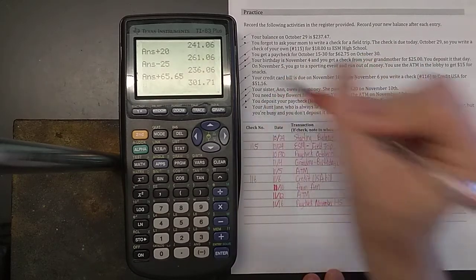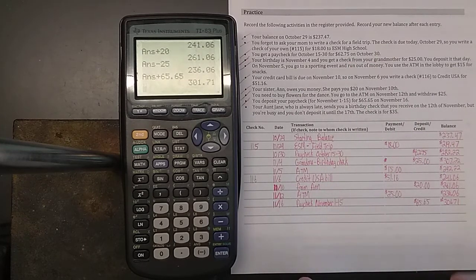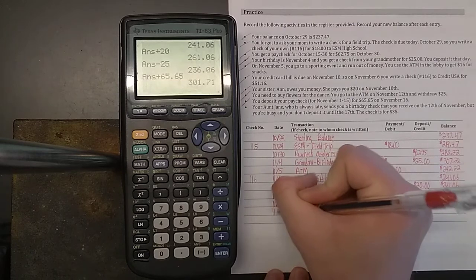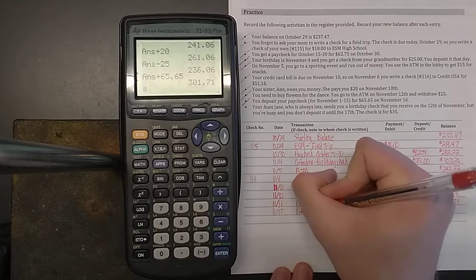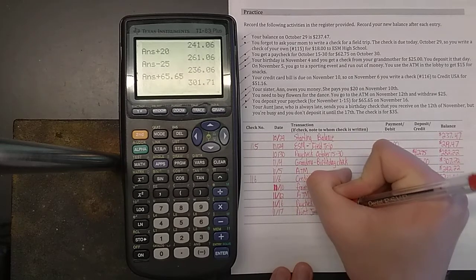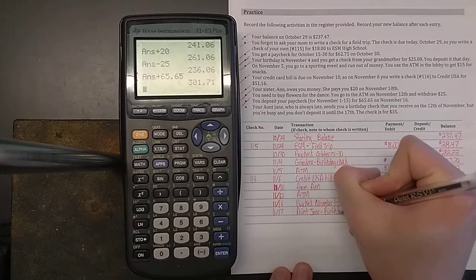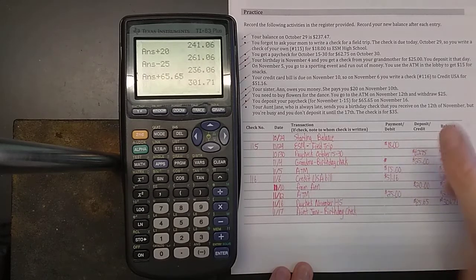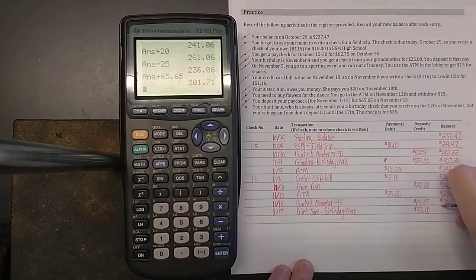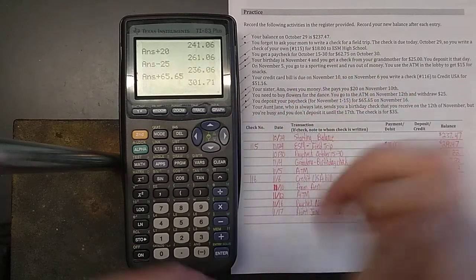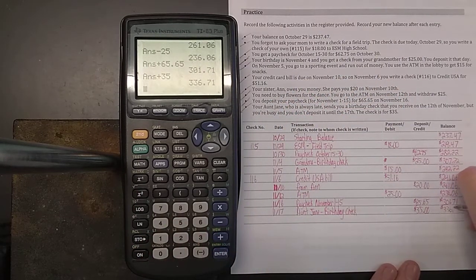And then finally, your Aunt Jane, who is always late, sends you a birthday check that you receive on the 12th of November, but you're busy and don't deposit until the 17th. The check is for $35. That's $35 more coming into your account. So your final balance is now $336.71.